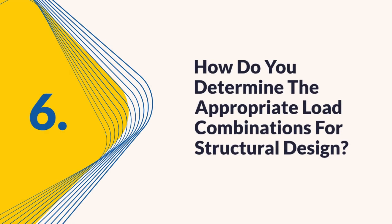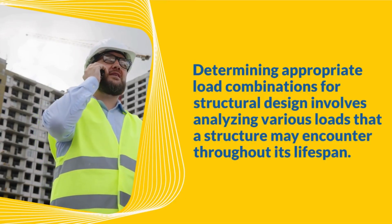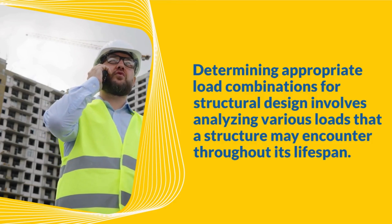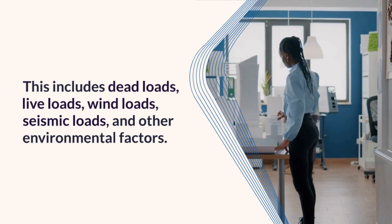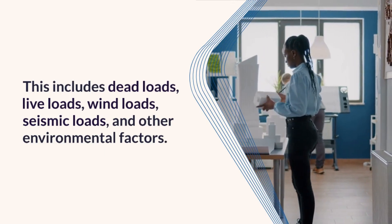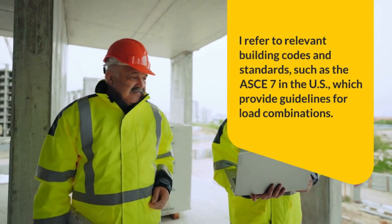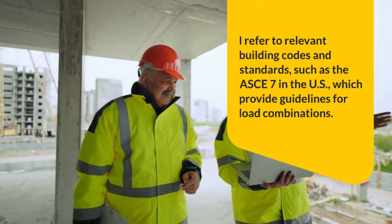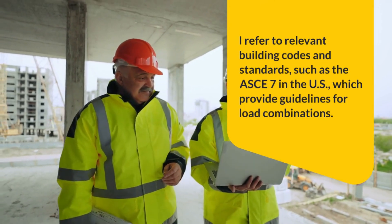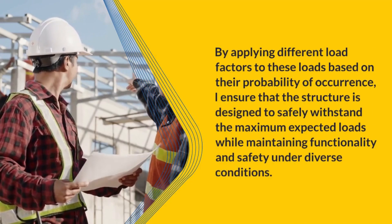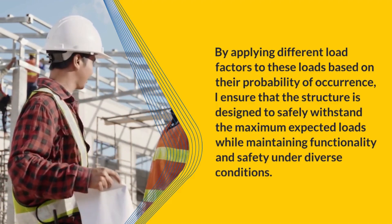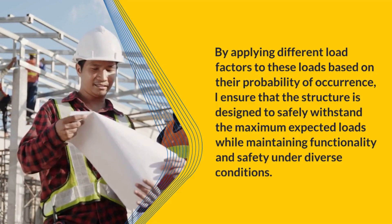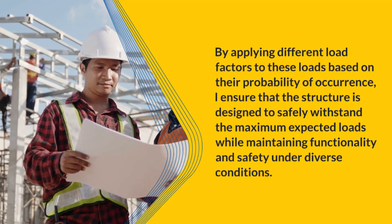Question 6: How do you determine the appropriate load combinations for structural design? Determining appropriate load combinations involves analyzing various loads a structure may encounter throughout its lifespan, including dead loads, live loads, wind loads, seismic loads, and other environmental factors. I refer to relevant building codes and standards, such as ASCE 7 in the US, which provide guidelines for load combinations. By applying different load factors based on their probability of occurrence, I ensure that the structure is designed to safely withstand the maximum expected loads while maintaining functionality and safety under diverse conditions.